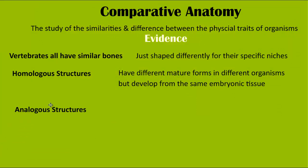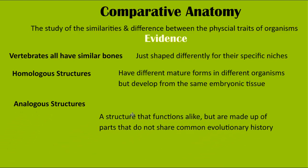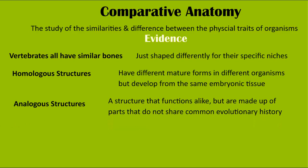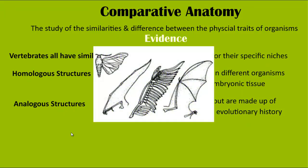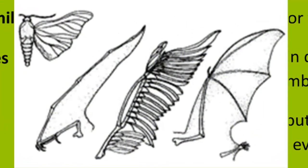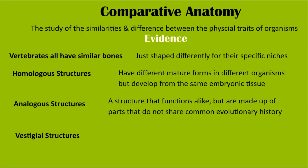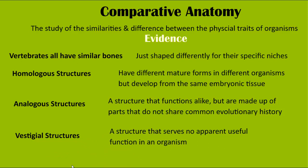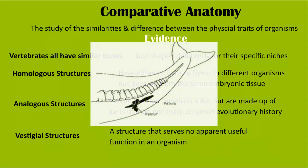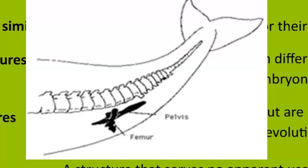We can also use analogous structures — structures that function alike but are made up of parts that don't share common ancestry in evolutionary history or the same embryonic tissue. They look and function alike but are made up of different parts and don't share that same history. Finally, there are vestigial structures — leftovers from history, structures that serve no apparent useful function in an organism but still exist. Similar to the human appendix, one example shows what's left of a hip structure from a whale, with the femur and pelvis bones — remnants from when they walked on land.